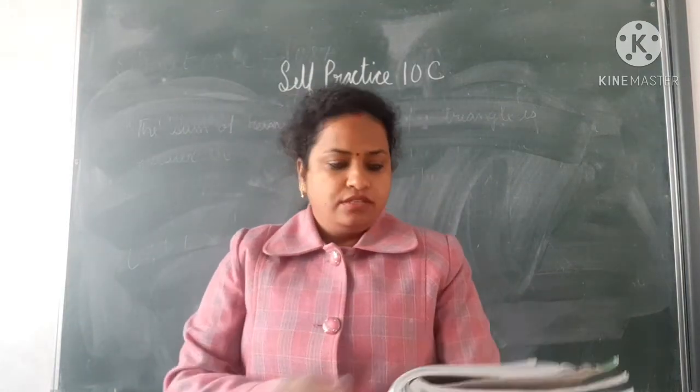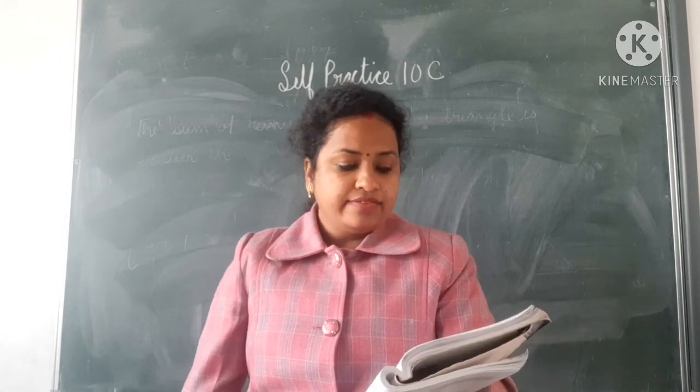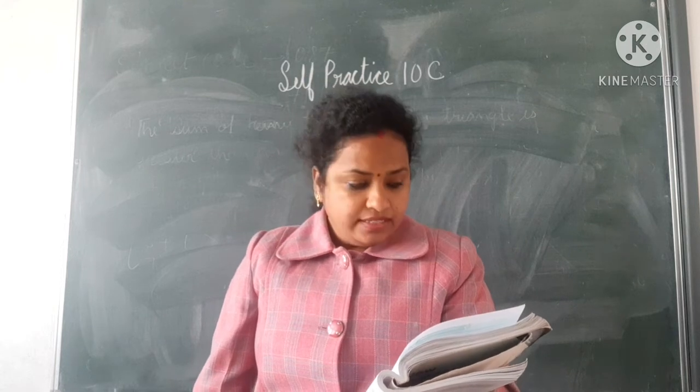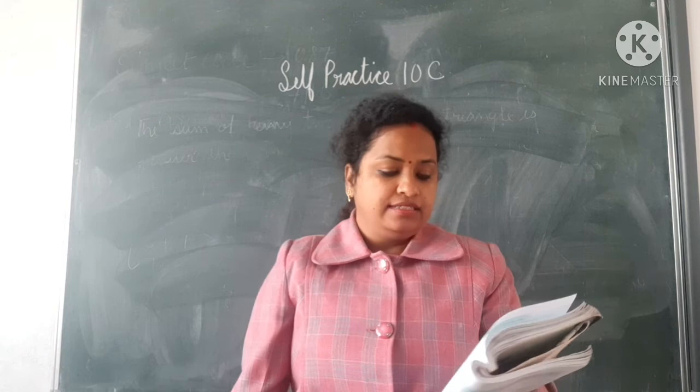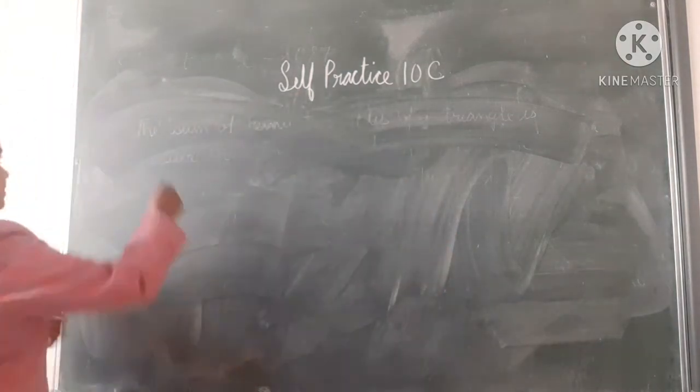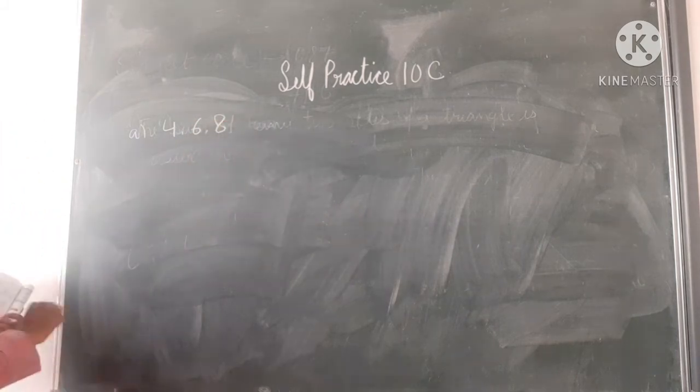Now see, question number 1. Determine whether a triangle can have sides with the given length. Part A: it is given 4, 6, and 8. Now check.